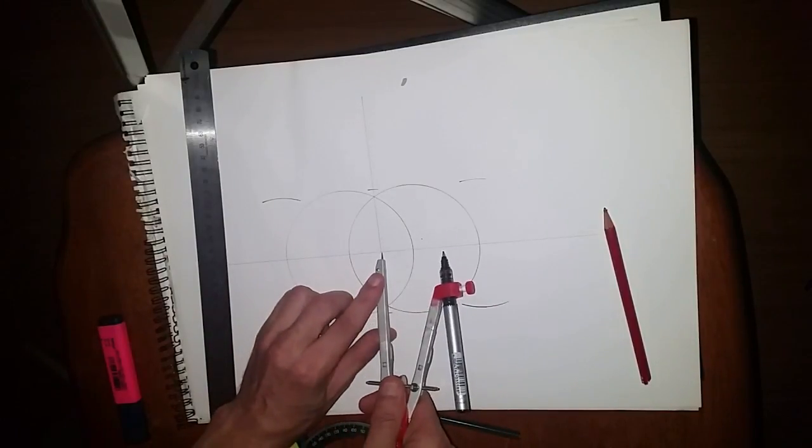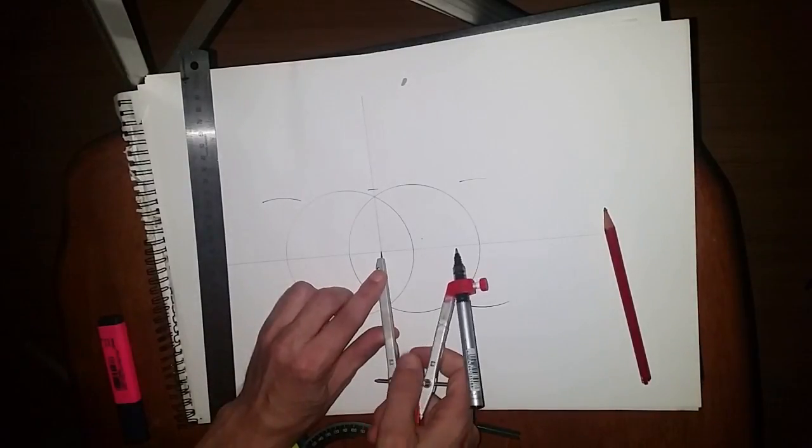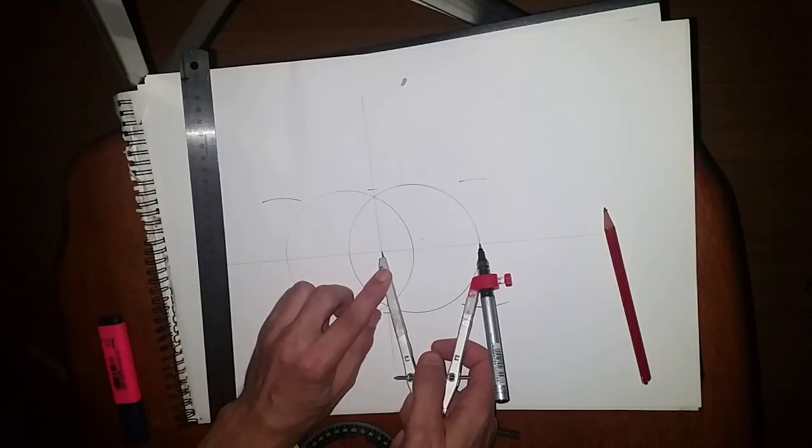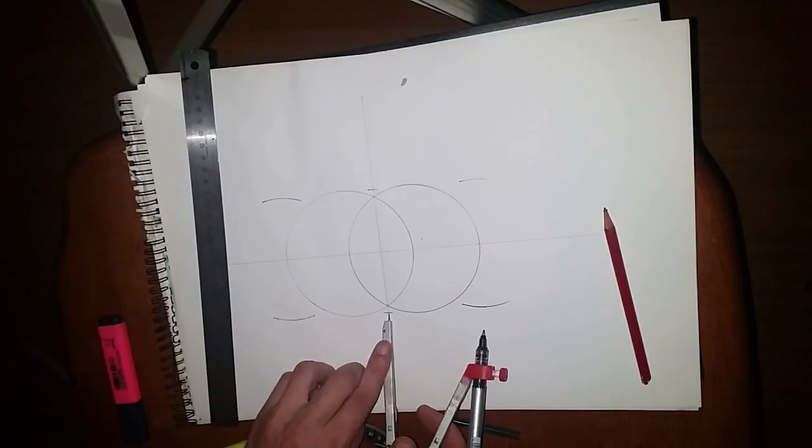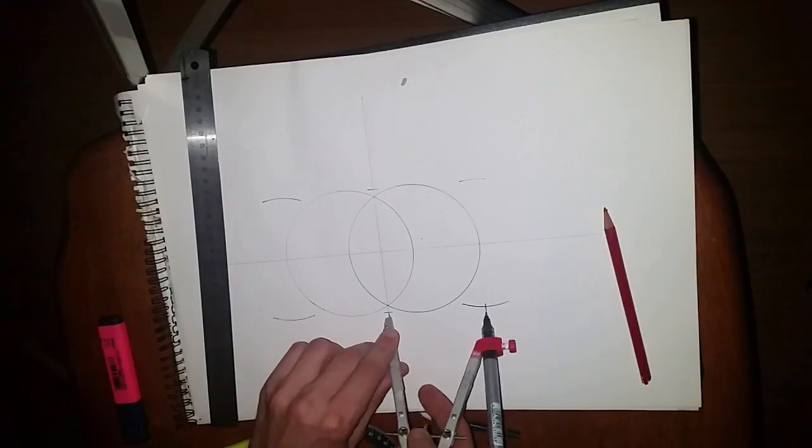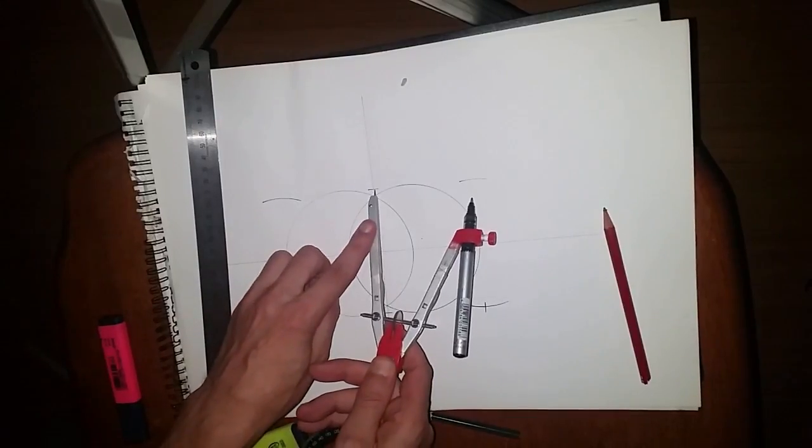And on the other side as well. Now I'm going to change the compass setting to from the center of the vesica to the outside. And now from that point, mark that off and mark it off here again on the other side and along the top as well.